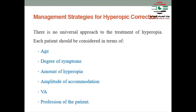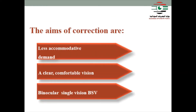The strategy for correction is not universal — there is no universal approach to correcting hypermetropia. Each patient should be considered individually, taking into account: age, degree of symptoms, amount of hypermetropia, amplitude of accommodation, visual acuity, and profession of the patient. The aims of correction are to reduce accommodative demands, achieve clear and comfortable vision, and maintain binocular single vision.